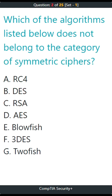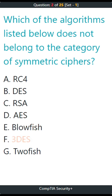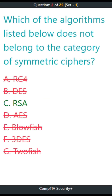Question 2. Which of the algorithms listed below does not belong to the category of symmetric ciphers? A. RC4, B. DES, C. RSA, D. AES, E. Blowfish, F. 3DES, G. Twofish. The correct answer is C. RSA.